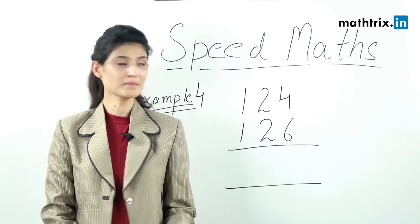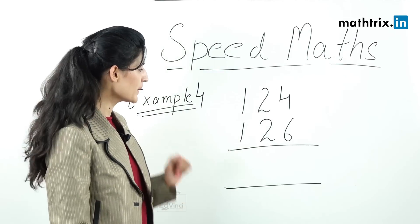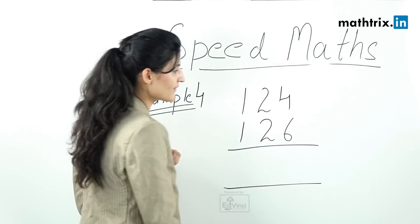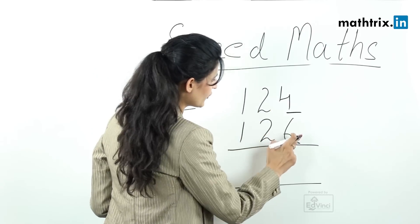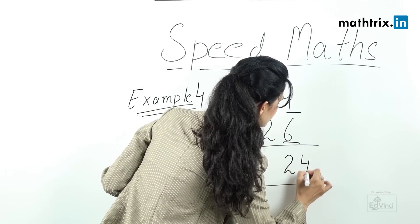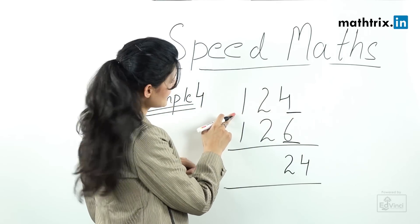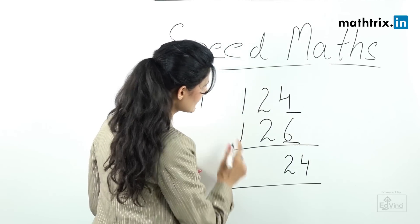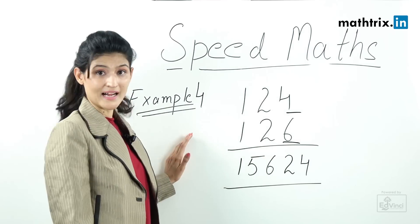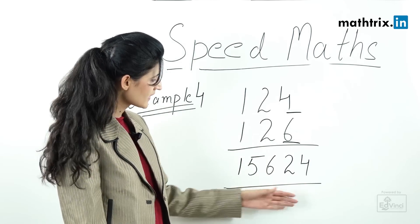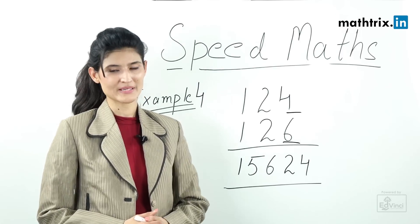Example number 4: 124 × 126. Step 1 — multiply the unit digits: 4 × 6 = 24. These are the last two digits. Then take the remaining number 12 and multiply by the next integer, 13: 12 × 13 = 156. Place 156 in front, giving us the final answer 15624.